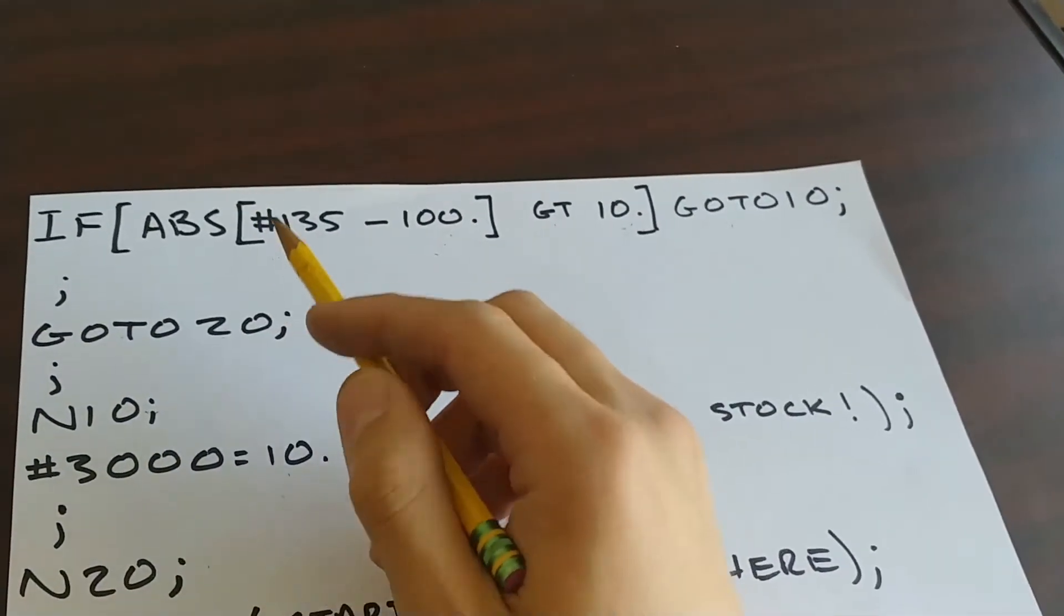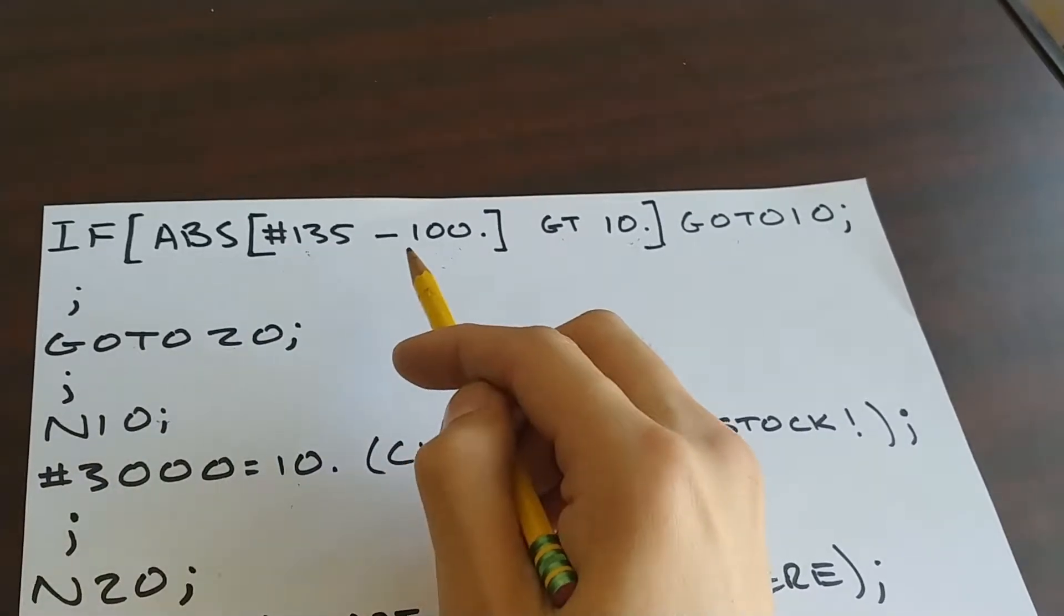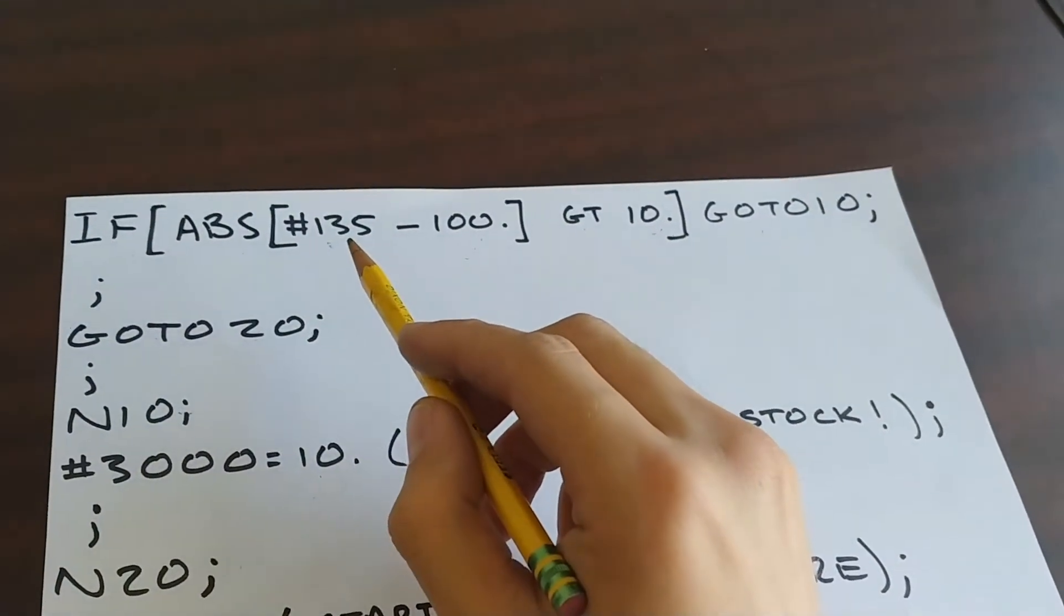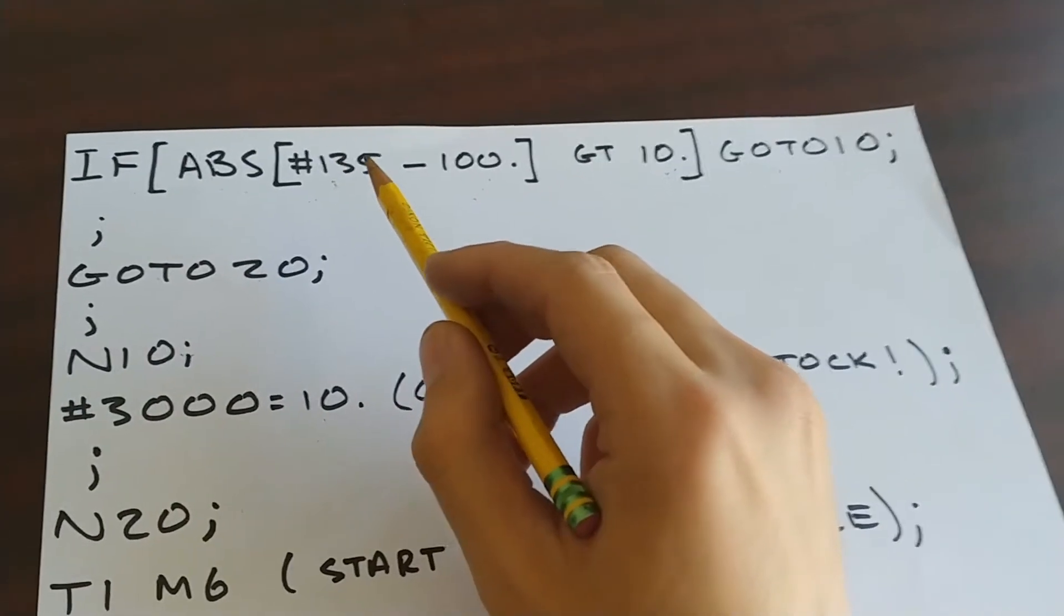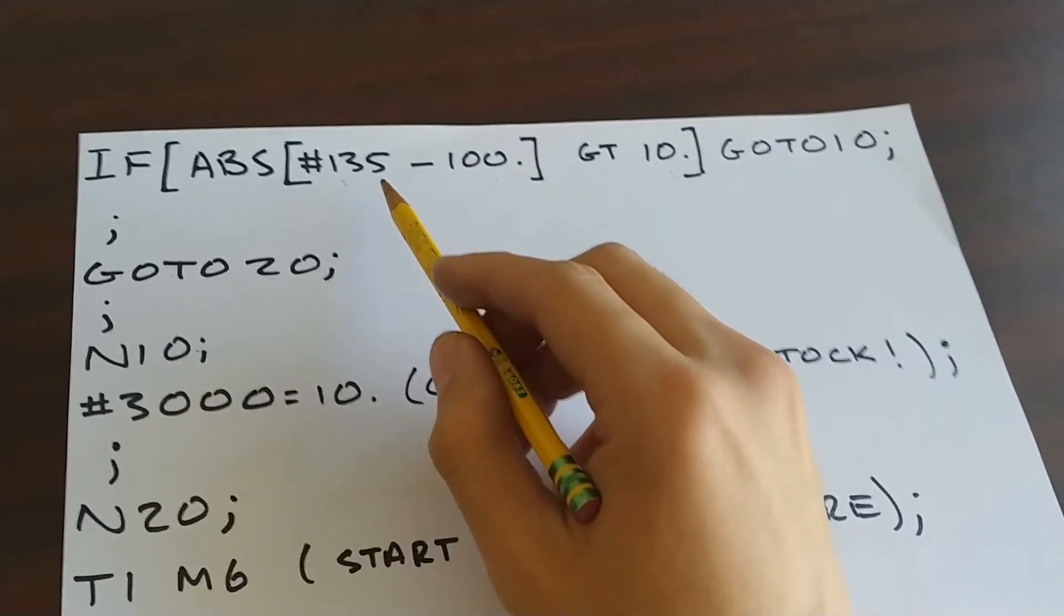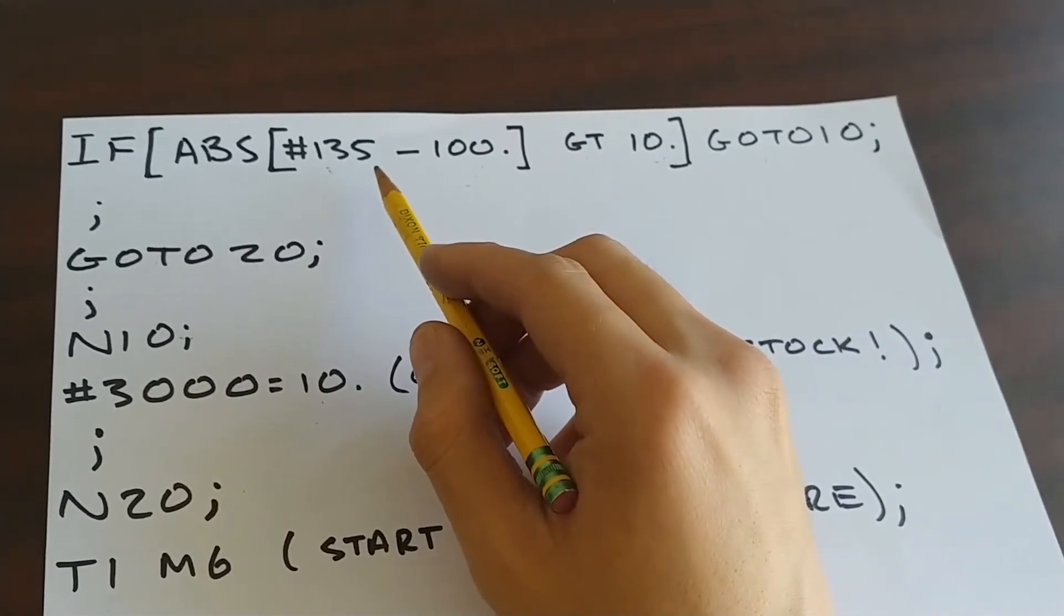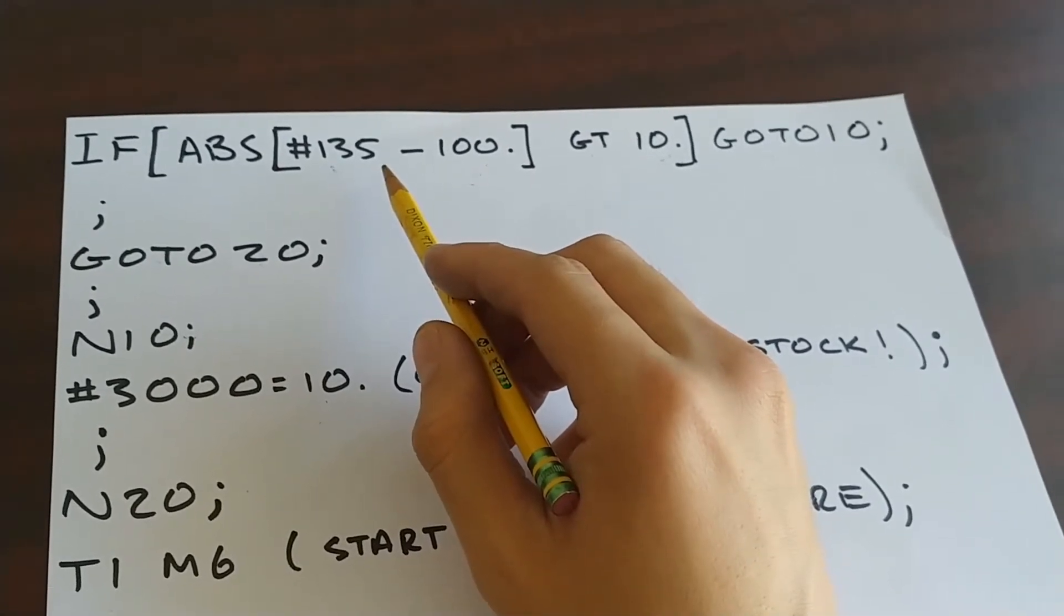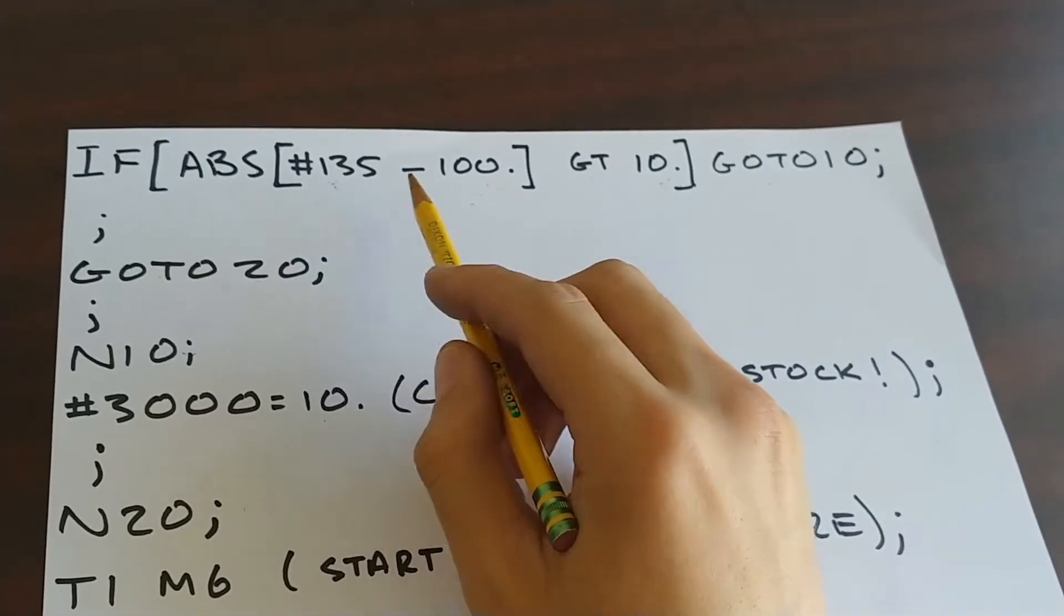So what is this over here? We have the absolute value of pound 135 minus 100. If you look in the Renishaw Inspection Plus Manual, they'll give you a table of which variables correspond to what values. In our case, pound 135 is going to be the X coordinate returned after a measure move. Now since my X0 is at the left side, if I'm running a program that needs a hundred millimeter long piece of stock, that X coordinate of the right hand side that I probed is going to be more or less 100.